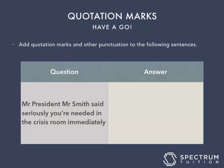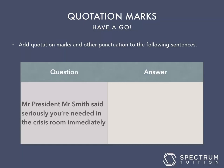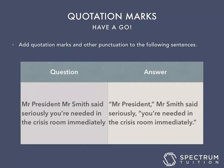Now add quotation marks and other punctuation to the following sentence: Mr. President, Mr. Smith said seriously, you're needed in the crisis room immediately. Pause the video now. The answer is: open quotation mark, 'Mr. President,' comma, closing quotation mark, Mr. Smith said seriously, comma, open quotation mark, 'you're needed in the crisis room immediately.' full stop, closing quotation mark.